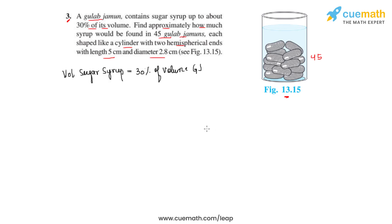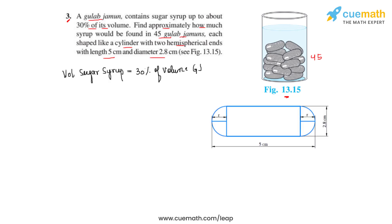We have to find how much syrup would be found in 45 such gulab jamuns. For that, we will first find the volume of one gulab jamun. We can draw a gulab jamun which is formed with a cylinder and two hemispherical parts attached to its ends.